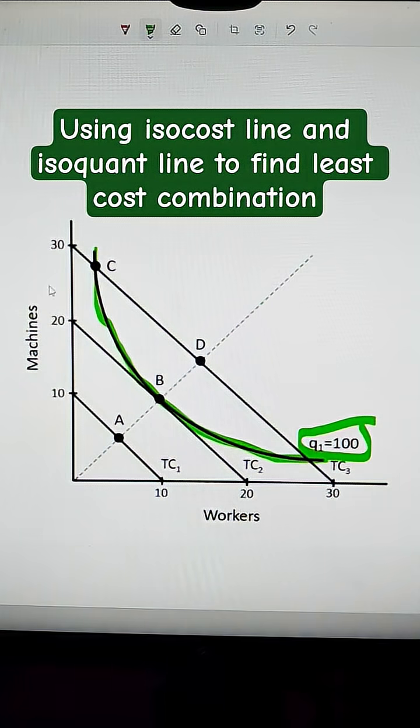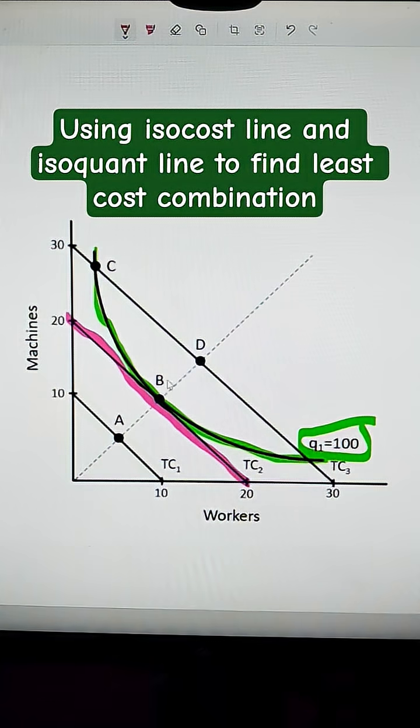So where the isoquant line is tangent, meaning it touches that straight line, with the isocost line, which is this line right here, then that's the cheapest or least cost combination that this firm could produce.